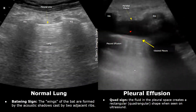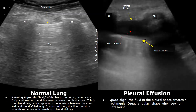This is the appearance of a normal lung seen between the ribs. The normal lung has a bat wing sign — the wings of the bat are formed by the rib shadows. These are the ribs and these are their acoustic shadows; the lung is present between these two ribs. This bright horizontal line is the pleural line, seen between the ribs. It is considered the body of the bat, representing the interface between the chest wall and the air-filled lung.